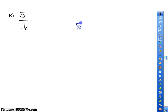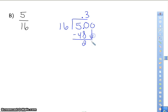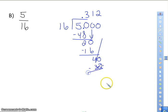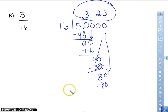5 sixteenths. 16 does not go into 5, so I add a decimal and a 0. 16 goes into 50 three times, that'd be 48. Add a 0, bring it down. 16 goes into 20 once. Add a 0, bring it down. 16 goes into 40 twice. Add a 0, bring it down. And 16 goes into 80 five times evenly. So your answer is 0.3125, or 3,125 ten thousandths.